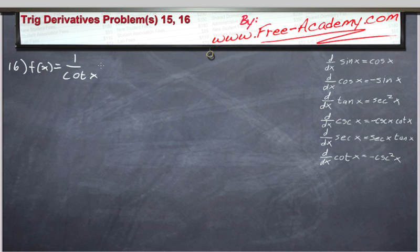One over the cotangent of x is equal to the tangent of x. This is by definition. One over tangent of x is cotangent of x. So we have problem 16 as f of x equals tangent of x.